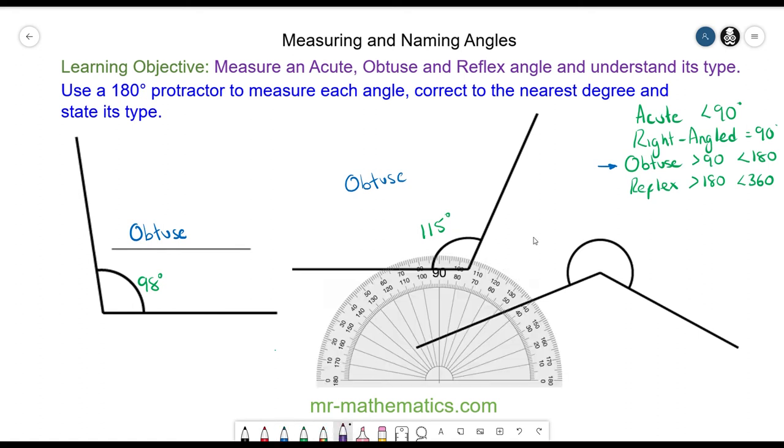We have a 180 degree protractor but the angle clearly goes beyond this. So there are two things we can do. We can either measure this angle here and add it on to this angle which we know is 180 degrees, or we can measure this angle and subtract this angle from 360 degrees. I am going to work out the blue angle and subtract it from 360 degrees.